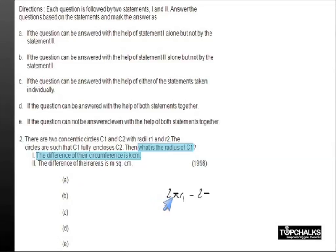minus 2πr2 is equal to k centimeters, or 2π(r1 - r2). This statement alone is not sufficient to find out what is the value of r1. If you look at the second statement, the